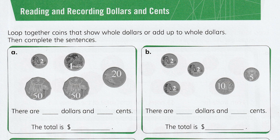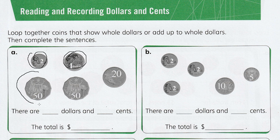So loop together the coins that show whole dollars or add up to a whole dollar, then complete the sentence. A $2 coin would be a whole dollar, so we'll loop that. A $1 coin would be a whole dollar. A 20-cent piece is not a $1, so we won't add it, but the two 50-cent pieces we can circle together to add up to a dollar.